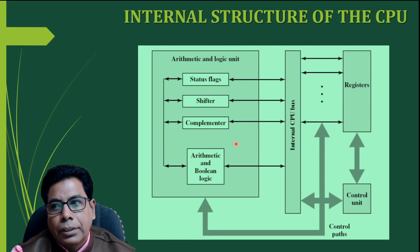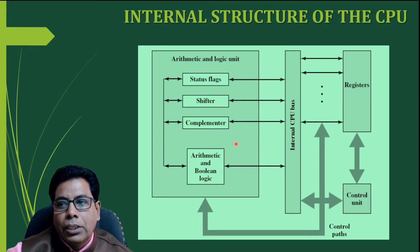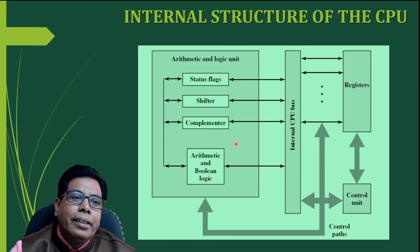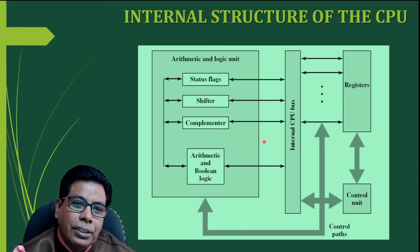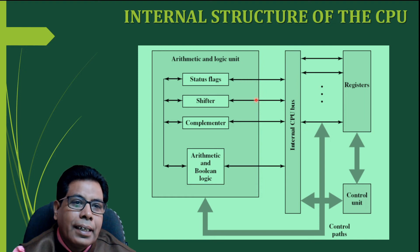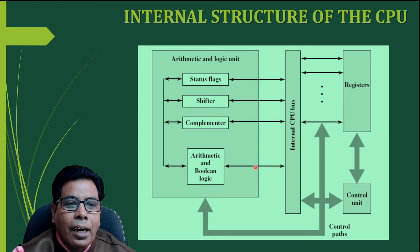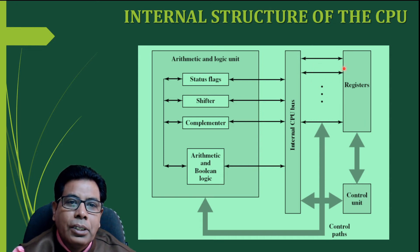The data transfer and logic control paths are indicated here. There is an internal CPU bus — this is bidirectional — for the flow of data. There is also bidirectional flow of data to the registers, and the control unit will also handle the flow of data and control signals.